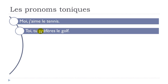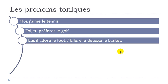Second example: TOI, tu préfères le golf. 'Préférer' means 'to prefer'. TOI, tu préfères le golf. Now the masculine form: LUI, il adore le foot. Here LUI is the pronom tonique, then IL is the pronom personnel, followed by 'adore' — to adore — le foot. We're talking about football here.